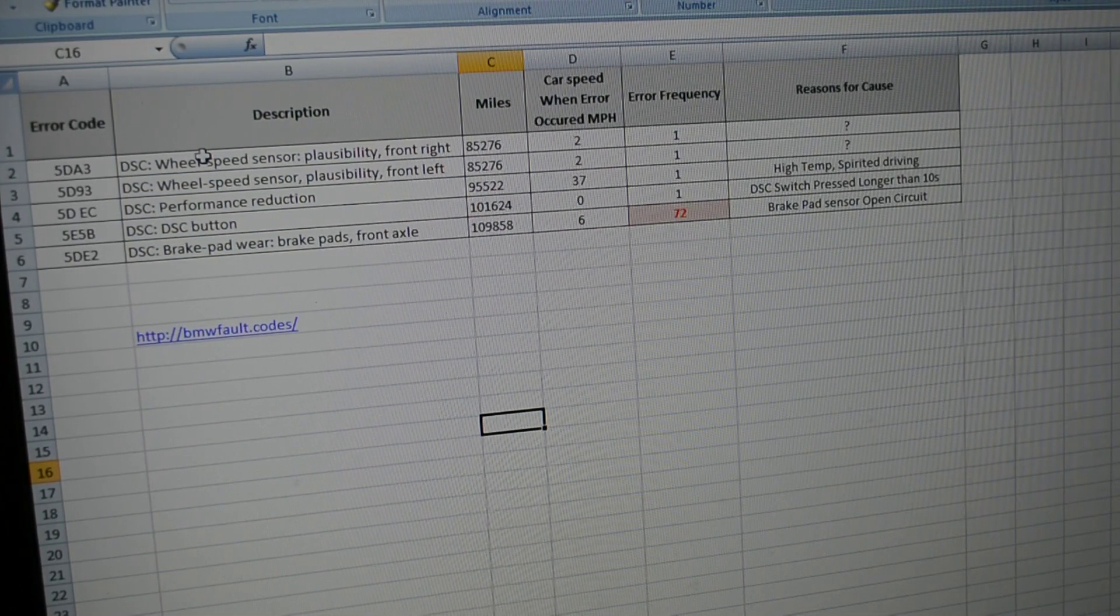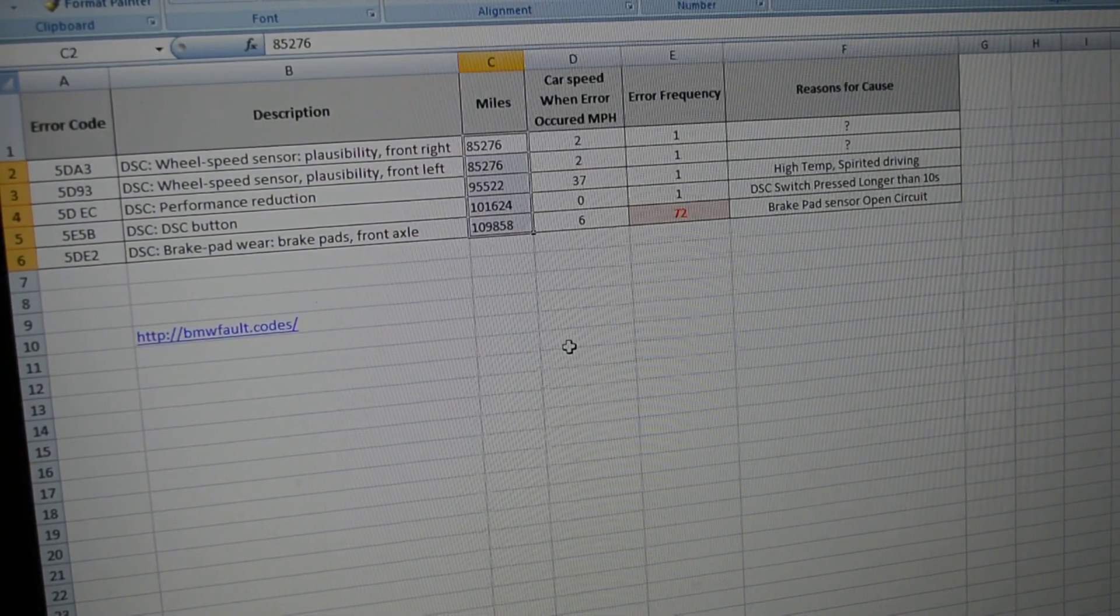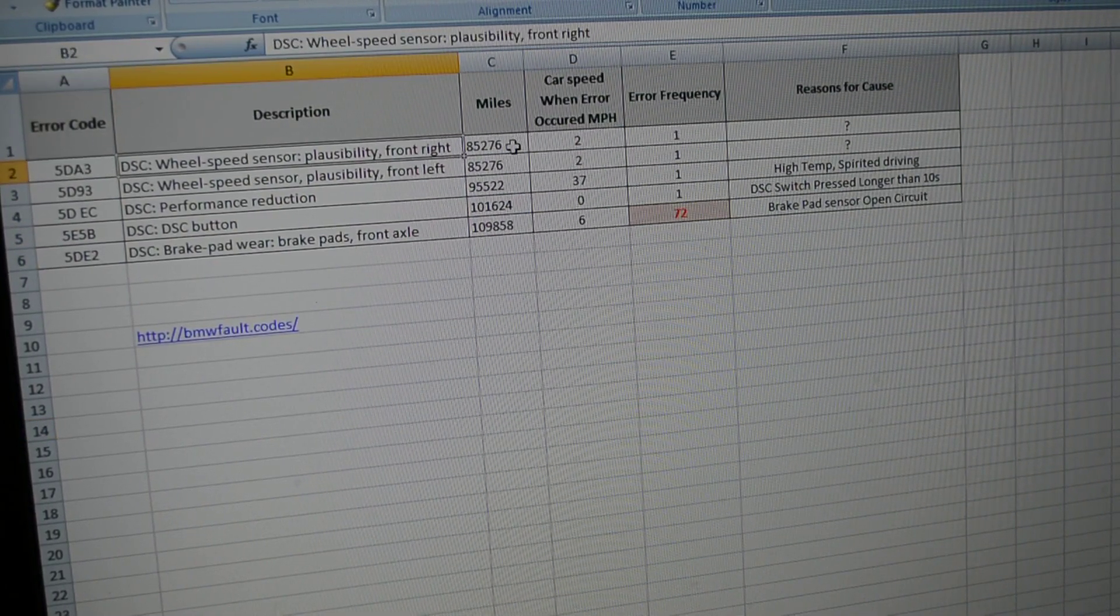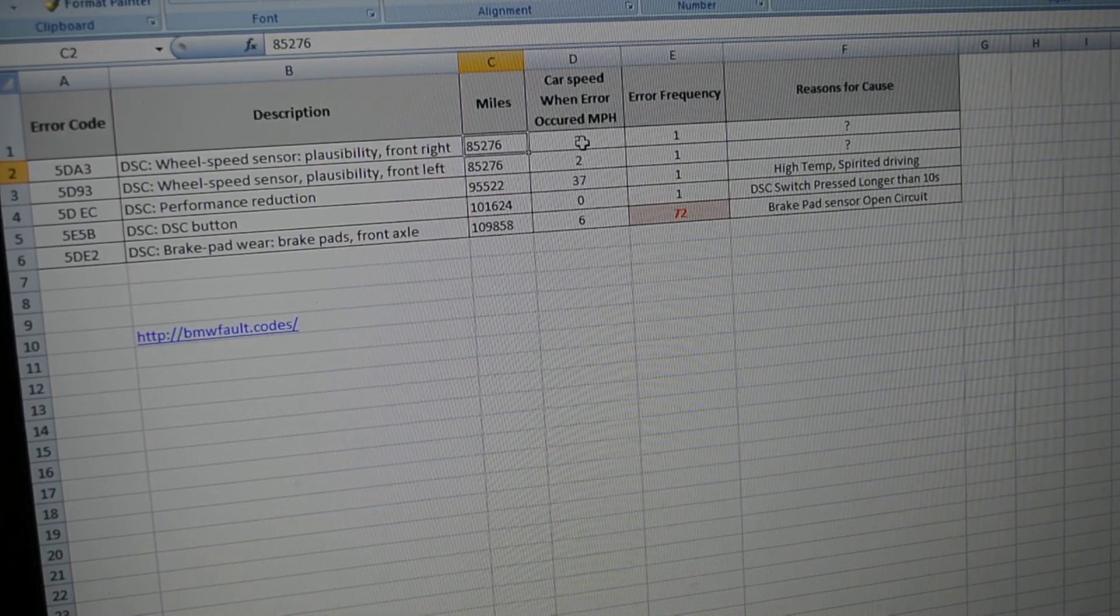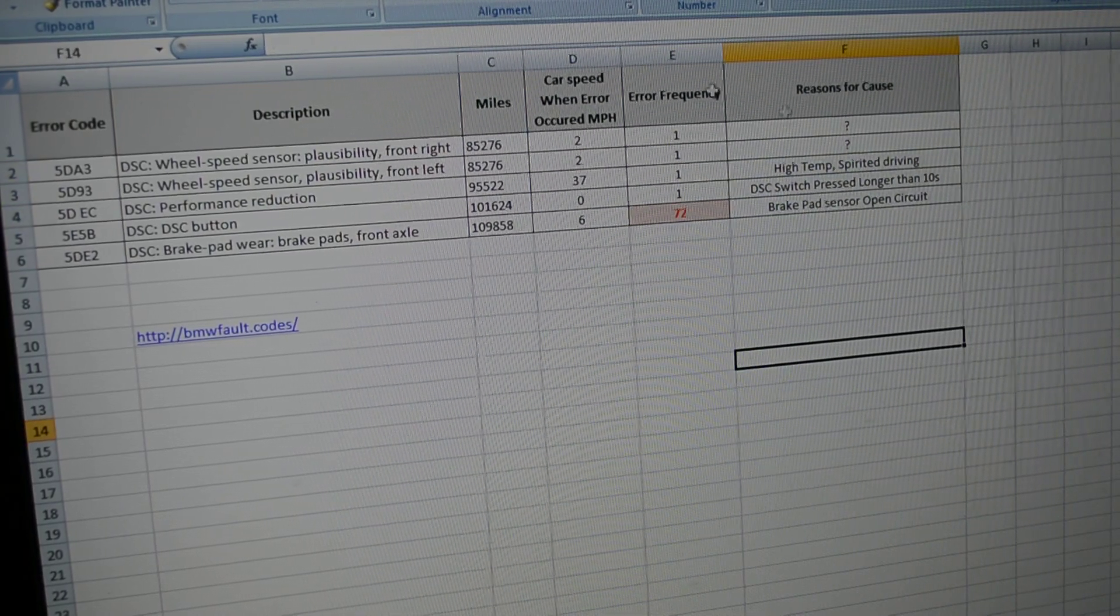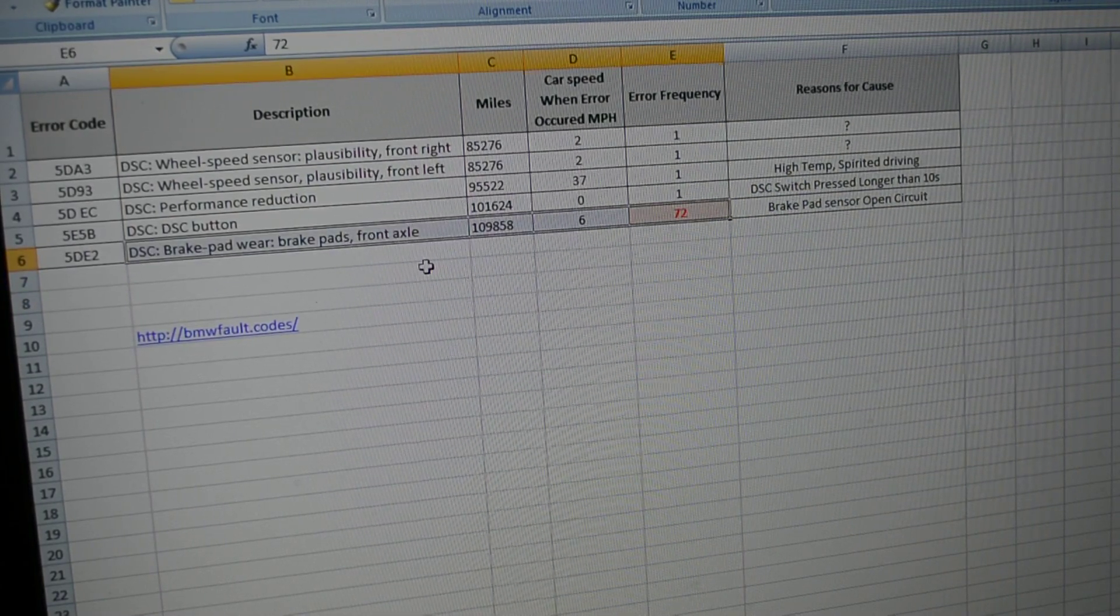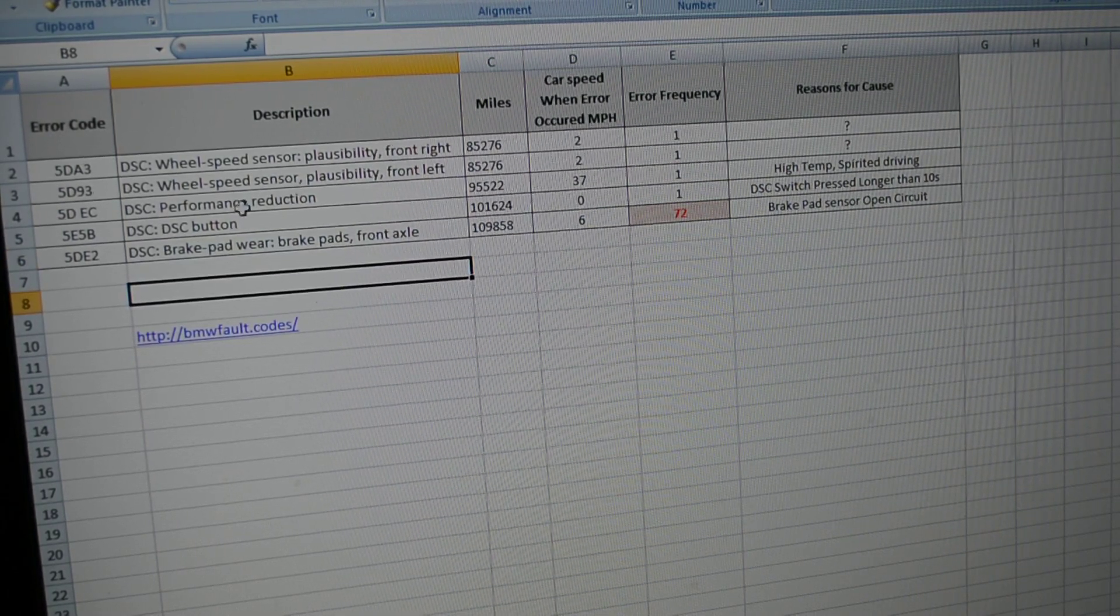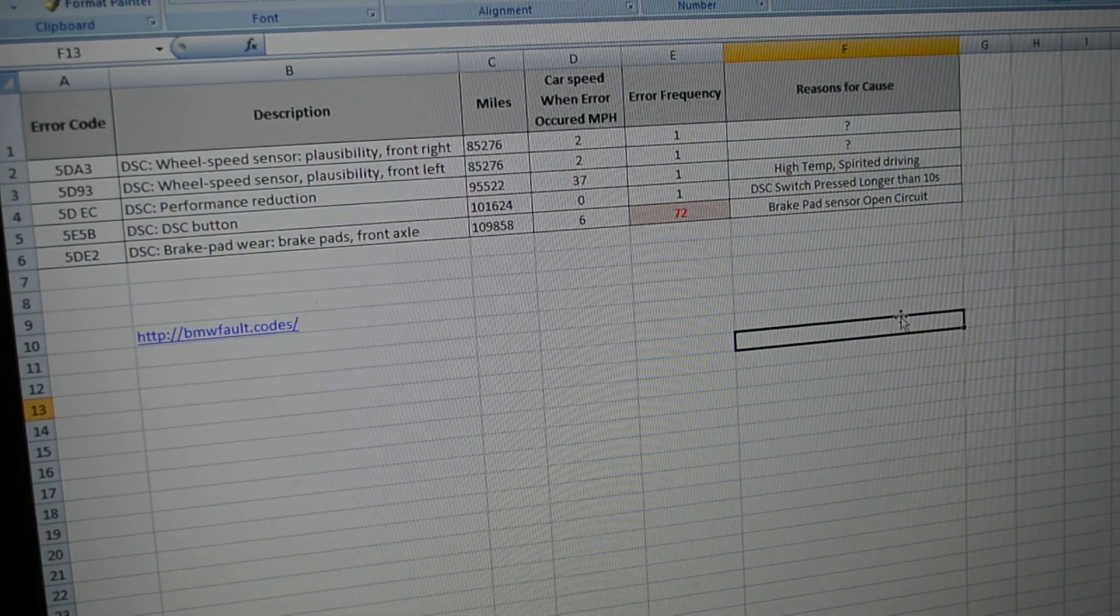Okay, here I managed to capture all the information in a spreadsheet. I did sort it based on the miles when the error actually occurred. The parameters I captured are error code, the description, the mile when the snapshot happened, the car speed, the error frequency, and the reason for the fault. Just by looking into the sheet, it's very obvious that this is what is actually throwing out the brake light error. But let's also deep dive a little bit on the other errors just to make sure we are actually going in the right direction troubleshooting the issue.